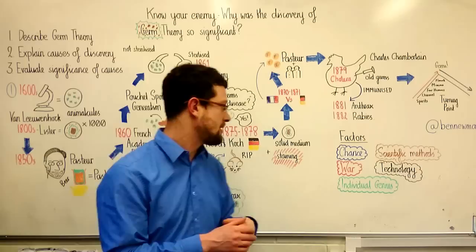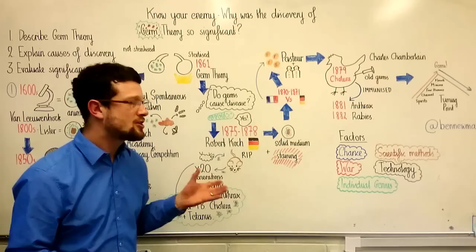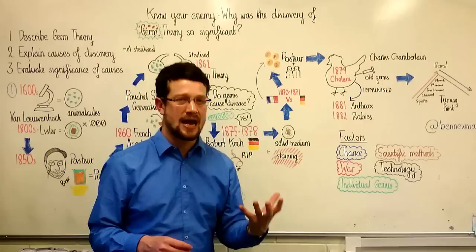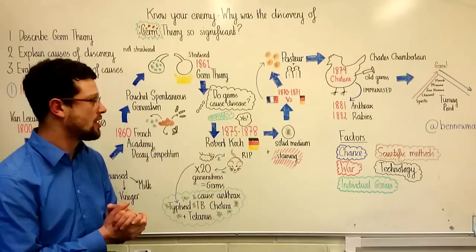Robert Koch also made two other important improvements. He developed a semi-solid medium, which made it easier to grow and study bacteria instead of the liquid that Pasteur had been using. And he also developed staining, which was a technique used to colour the bacteria he was studying, which meant they were easier to see and work with.